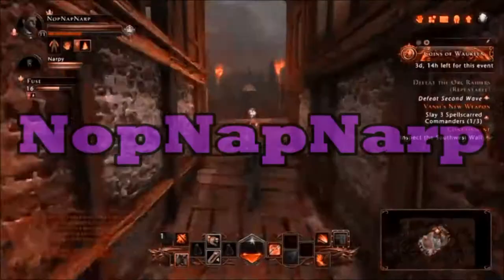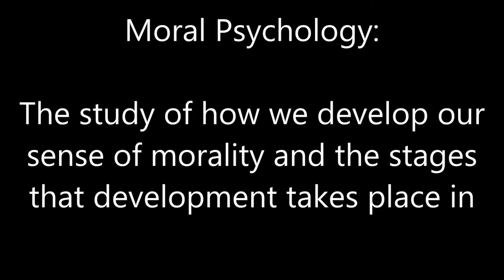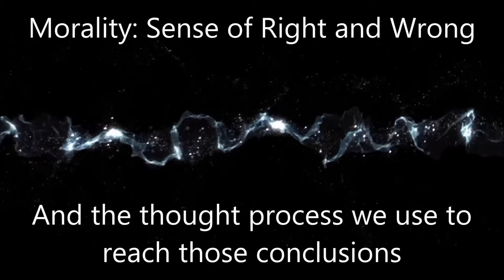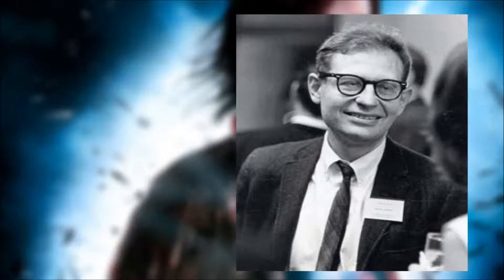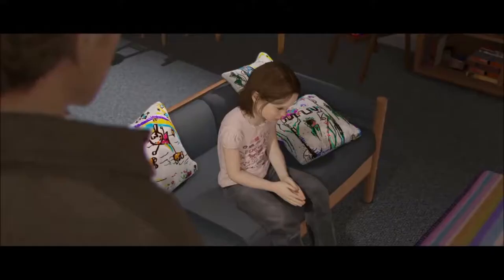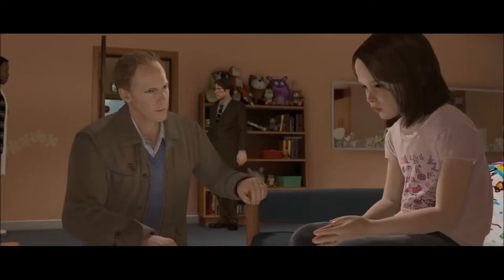Morality is often discussed in philosophy, but that's more along the lines of defending a belief as being right or wrong. Moral psychology, on the other hand, is the study of how we develop our sense of morality and the different ways it takes form throughout our lives. Our morals are basically our sense of what is right and wrong and the thought process we use to achieve those beliefs. The most prominent theory on moral development comes from Lawrence Kohlberg, a moral psychologist of the mid-1900s, who after years of studying people of all ages and related theories from Jean Piaget, theorized that there are three stages of moral development that humans engage with throughout their lives.